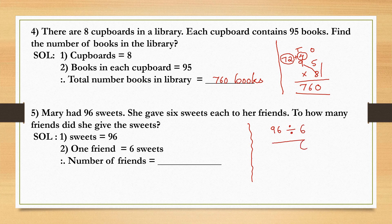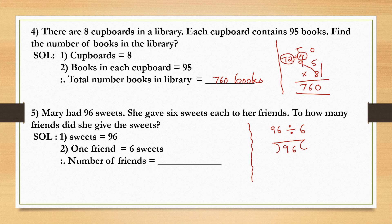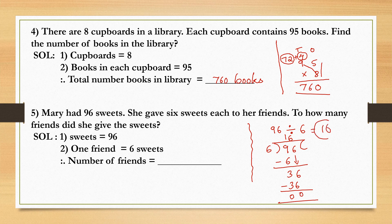So write ninety-six, the dividend inside. Six, the divisor outside. Turn the table of six. Six times one is six. Nine minus six gives you three. Bring down six. Six times six is thirty-six. So the remainder is zero. What is the quotient you get? The quotient is sixteen. So number of friends she distributed equals to sixteen friends.